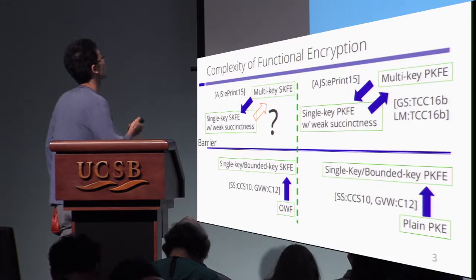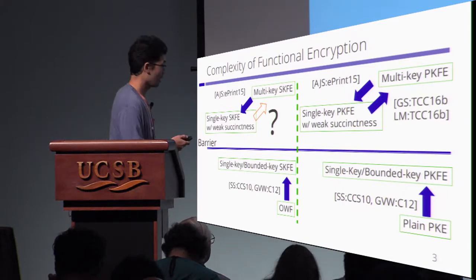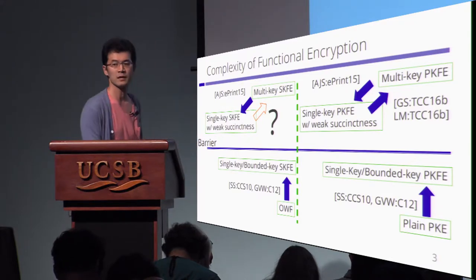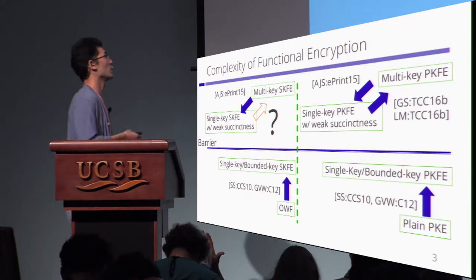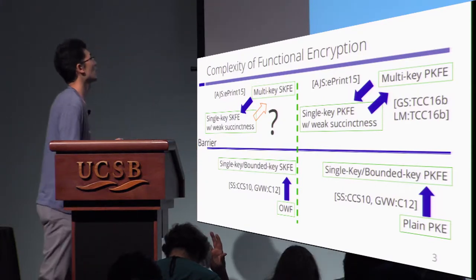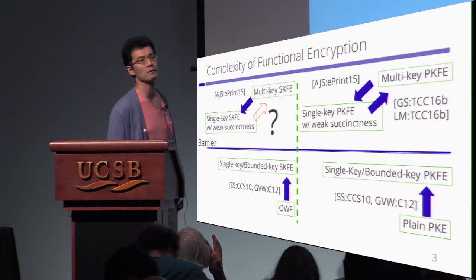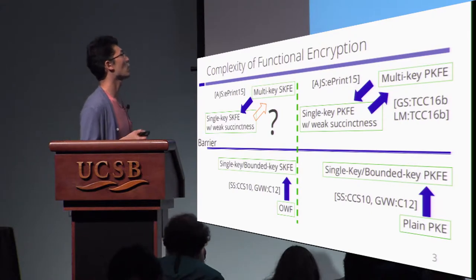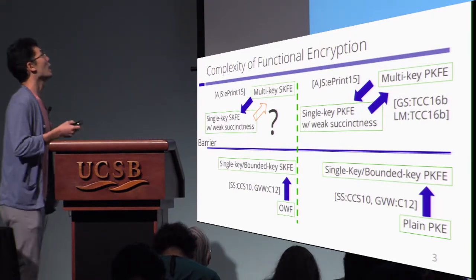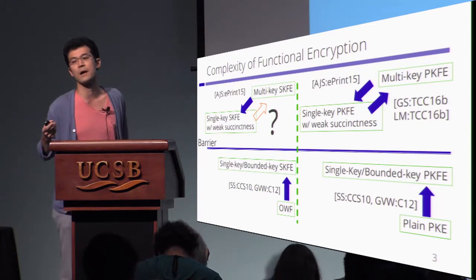Here is a kind of a map for complexity of functional inclination. On the right, there are public key primitives. On the left, there are secret key primitives. If we have a one-way function, we can construct a single key or bounded key secret key functional inclination. Similarly, if we have a plain public key encryption, we can construct a single key or bounded key public key functional inclination. However, it is very difficult to construct a multi key secret key or public key functional inclination.